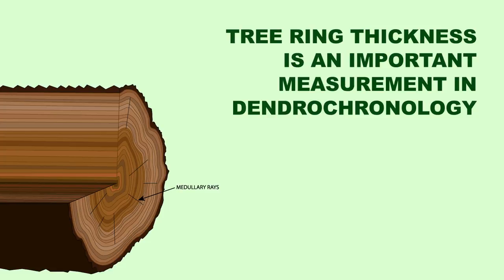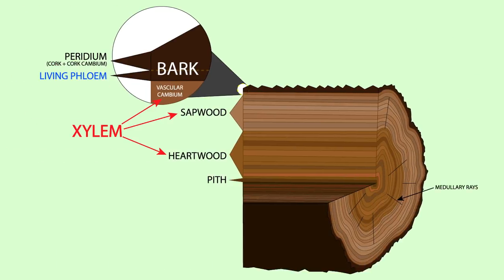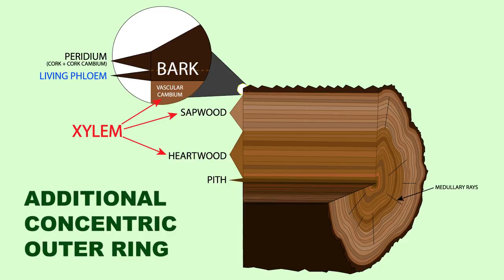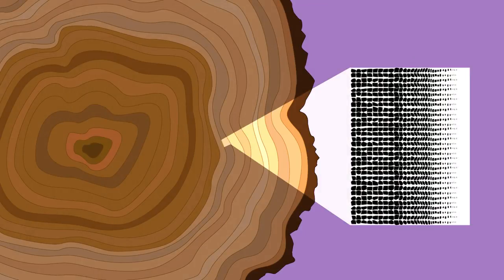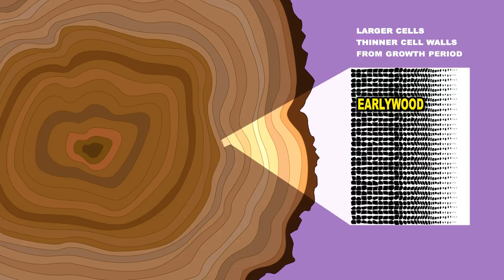Tree ring thicknesses are an important measurement in dendrochronology. Each year, new cells in the layer called the cambium, located between the previous year's layer of wood and a tree's bark, grow to form an additional concentric outer ring. The growth rate of a tree changes in conjunction with the seasons, forming the characteristic pattern shown here. Zooming in on one ring, we see cells of the early wood, which have larger cells and thinner cell walls.